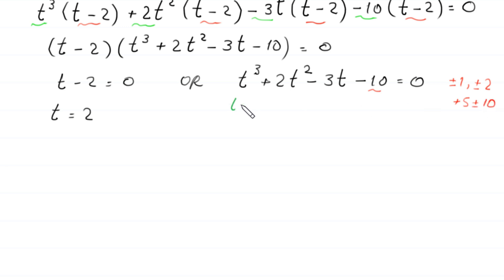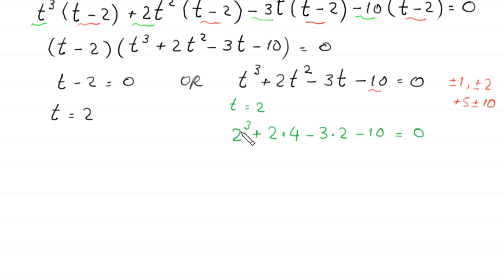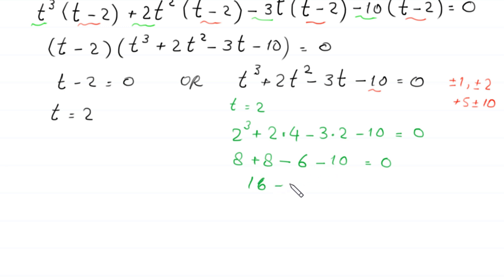If we put t equal to 2 in the cubic equation, we get 2 cubed plus 2 times 2 squared minus 3 times 2 minus 10, which equals 8 plus 8 minus 6 minus 10, equals 16 minus 16, equals 0. So t equals 2 is again a root and t minus 2 is a factor of the cubic.